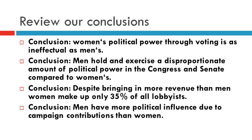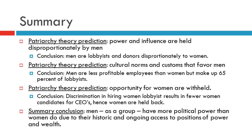Let's take all three pieces of information, put them together, and compare them to the predictions. First, women's political power through voting is as ineffectual as men's — a wash. Second, men hold a disproportionate amount of political power in Congress and the Senate compared to women. Third, despite bringing in more revenues than their male counterparts, women make up only 35% of all lobbyists in D.C. And finally, men have more political influence due to campaign contributions than women, which is partly related to the wage gap. Are the data best explained by the patriarchal model or the egalitarian one? The patriarchal theory predicts men will hold disproportionate amounts of power and influence, and we see disproportionate numbers of men as lobbyists and donors.